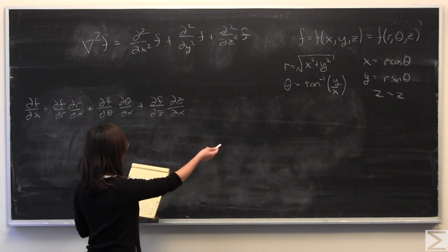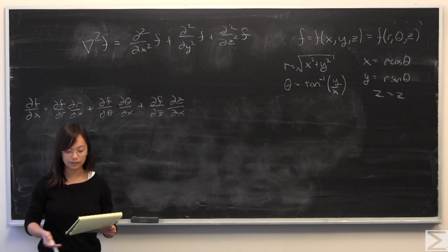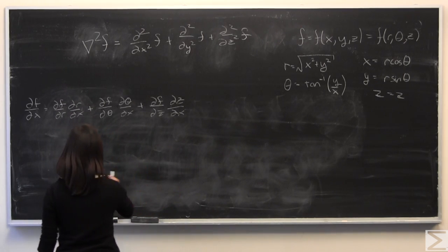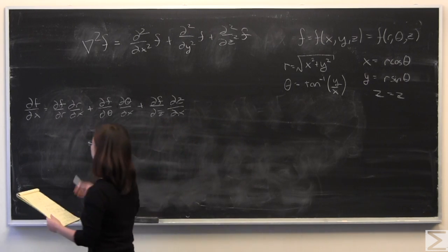I started by giving you how to transform from x, y, z to r, theta, and z. For the sake of time, I'll be looking at the transformation of the partial derivative of x first.